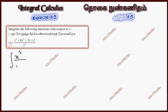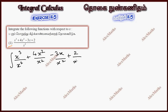So, integration of x³/x² plus 4x²/x² minus 3x/x² plus 2/x² dx. This is further simplification. This is x, this is 4, minus 3/x plus 2/x² dx.